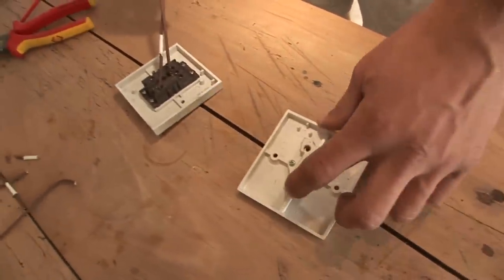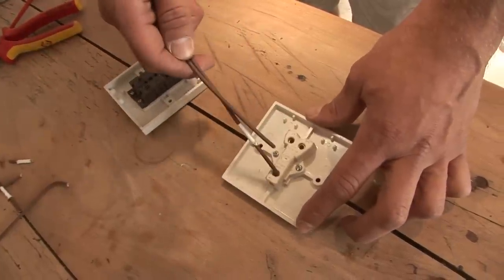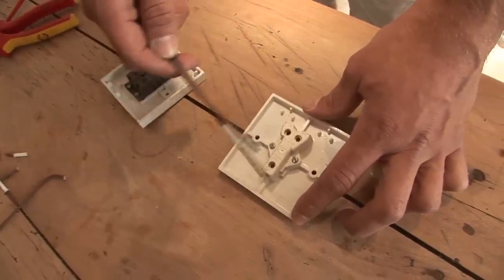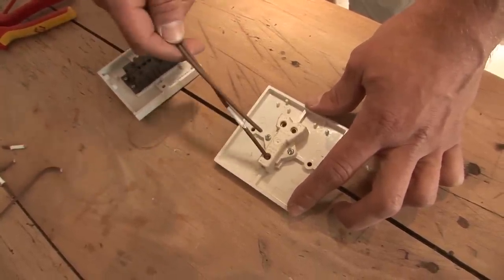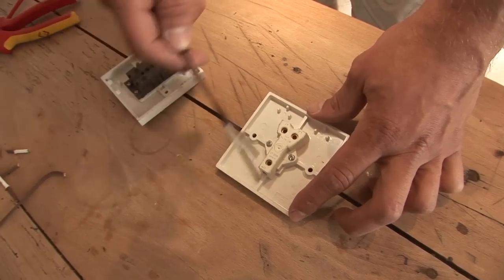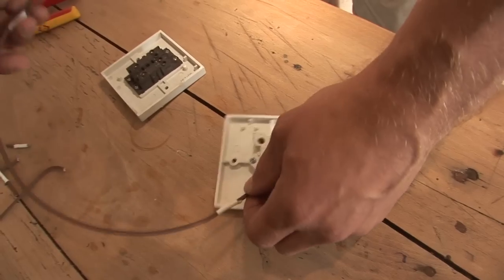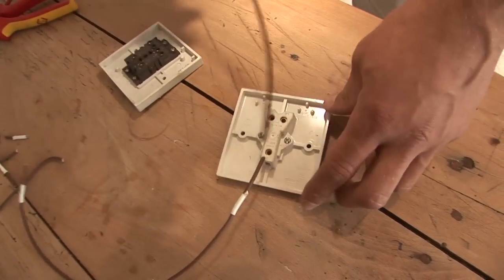Then we've got the common and the common. One of these commons will be a continuous live, which will come from the fuse board or another light if it's been looped over. So you have your live that comes into here. We can just ignore that from now on.